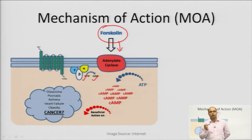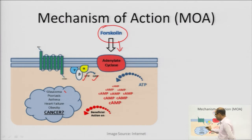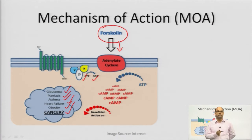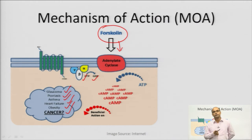The accumulation of cyclic AMP inside the cell has a beneficial effect on the body in diseases like glaucoma, psoriasis, asthma, heart failure, obesity, and cancer. This is the mechanism of action with which the phytoconstituent Forskolin acts in the body.